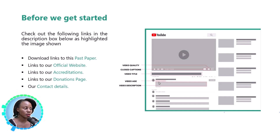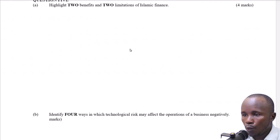Before we get started, check out the following links in the description box below as highlighted in the image shown. You'll be able to get our past papers, link to our official website, link to accreditations, donation page, and contact details. Welcome back to another lesson — we continue with our revision series.